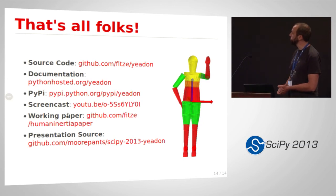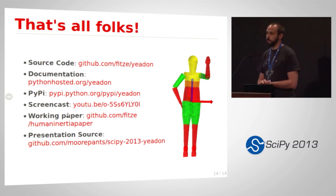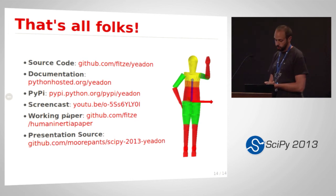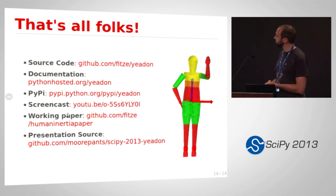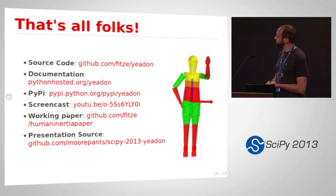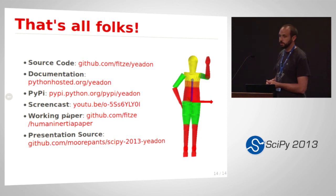That's all. It's a simple program to help you get these inertial parameters of a person very rapidly and with reasonable accuracy. The source code is online, we've got full documentation, a screencast, and a little paper we're working on to submit soon. The source code for the presentation is online as well. Thank you.